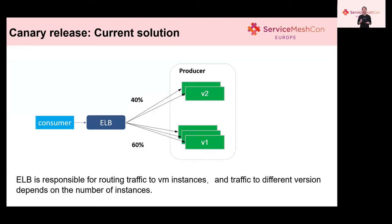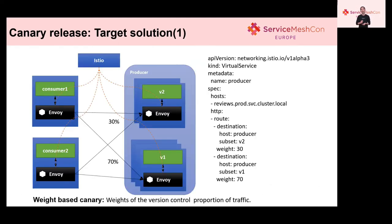Next is canary release. Canary is one important part in our customer's daily work. With the current solution, ELB is responsible for routing traffic to instances, and the traffic to a different version depends on the number of instances. There are three instances of version 1 and two instances of version 2, so 60% of traffic will be sent to version 1 and 40% will be sent to version 2. In the target solution, by issuing traffic weight policies, traffic weight for different versions can be specified. Weights control the proportion of traffic each version receives. For example, the above configuration routes 30% traffic to version 2 and 70% to version 1, no matter how many instances each version has.